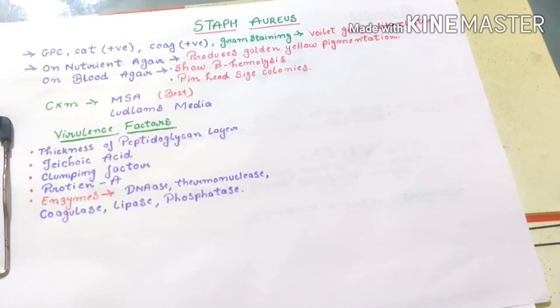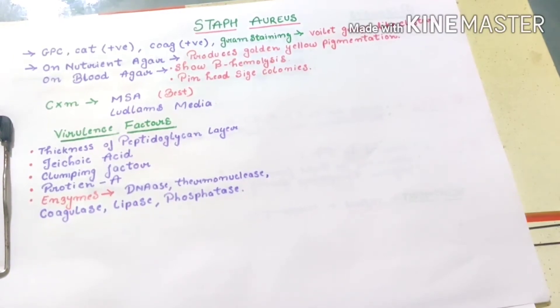Hello guys, welcome to my channel. In this video we will talk about Staph aureus. As you know, Staph aureus is the most important organism in GPC, which means gram positive cocci, as well as in pathogenic Staph. Its medical or clinical value is the highest, so we will study about Staph aureus in detail.